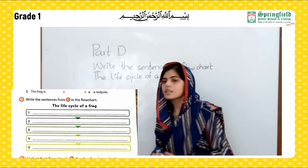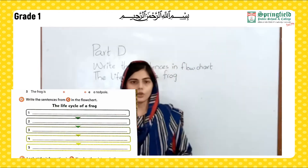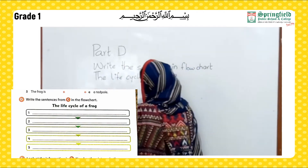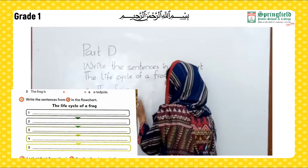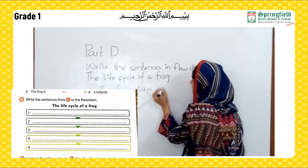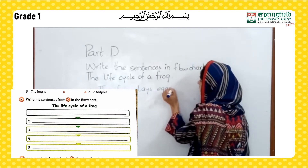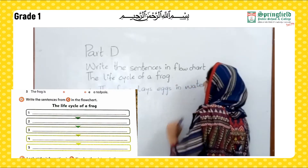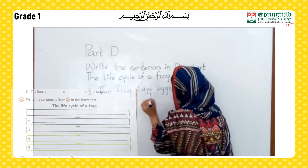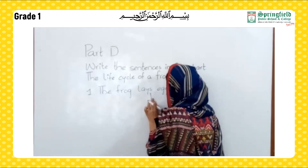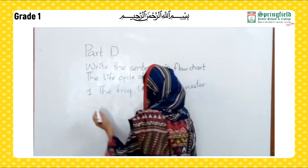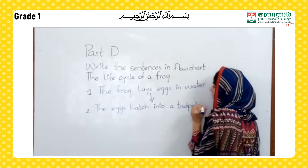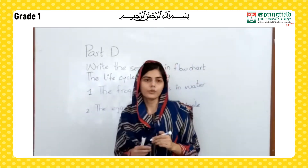For the first sentence, what are we going to write? The frog lays an egg in water. So for the first statement, you are going to write: the frog lays egg in water. For the second statement: the egg hatches into a tadpole. In this way, you have to complete the life cycle of the frog.